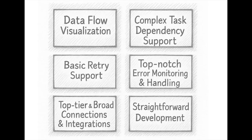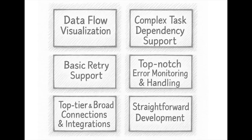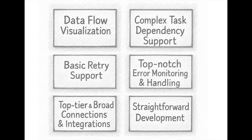You also need complex task dependency support. A lot of pipelines are not easy — you can have multi-interdependent tasks, and you need to be able to say this depends on that, this runs on the first of the month, this depends on these three other things. You need basic retry support and top-notch error monitoring and handling — you need to know what's broken and find logs. You also need top-tier broad connections and integrations to connect to everything: Snowflake, Databricks, RDS, EC2, and more.